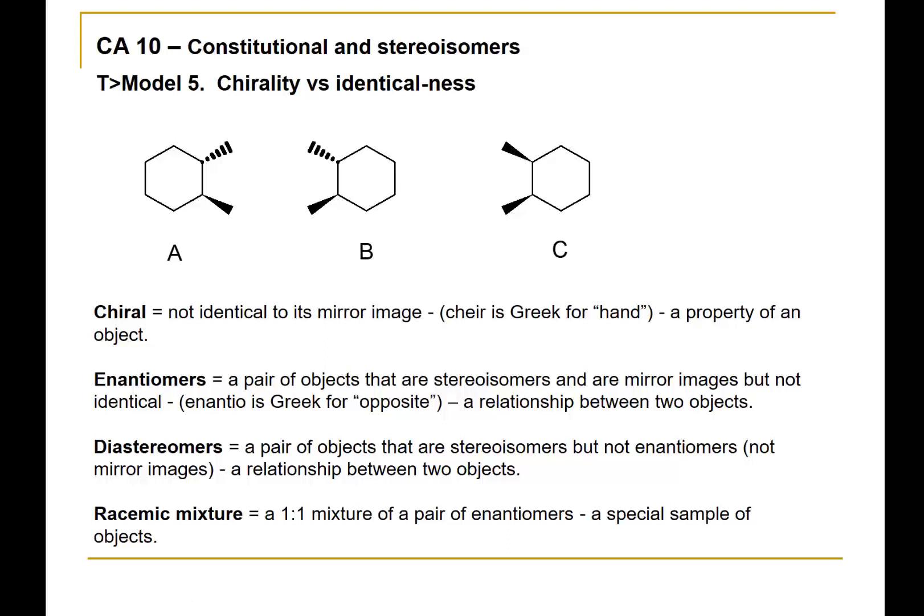Now that we've reviewed these definitions, I'm going to ask you to look at key question number seven, where we start to look at the relationship between the structures drawn here. In the first case, you're asked: what is the relationship between molecules A and B? Note that they have the exact same molecular formula and the exact same atom connectivity — this would be 1,2-dimethylcyclohexane — and they're both trans.